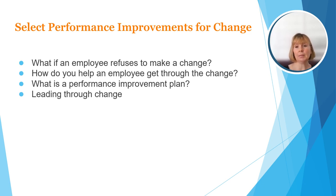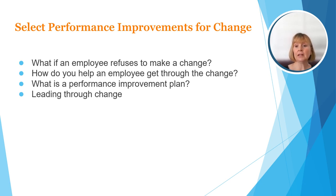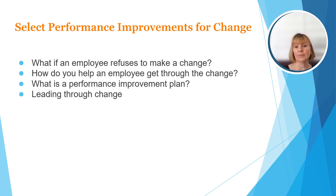Sometimes resistance may be more deeply rooted and will require additional time or additional training with that individual. A performance improvement plan is developed by a supervisor and the employee, focused on correcting employee behavior. It's typically developed after a few unresolved conversations, and it's a written record that goes into their employee file. With follow-up, it may be resolved in a week or could take several months depending on the depth of the behavior. You'll usually put a follow-up timeline in the plan and document those follow-ups.